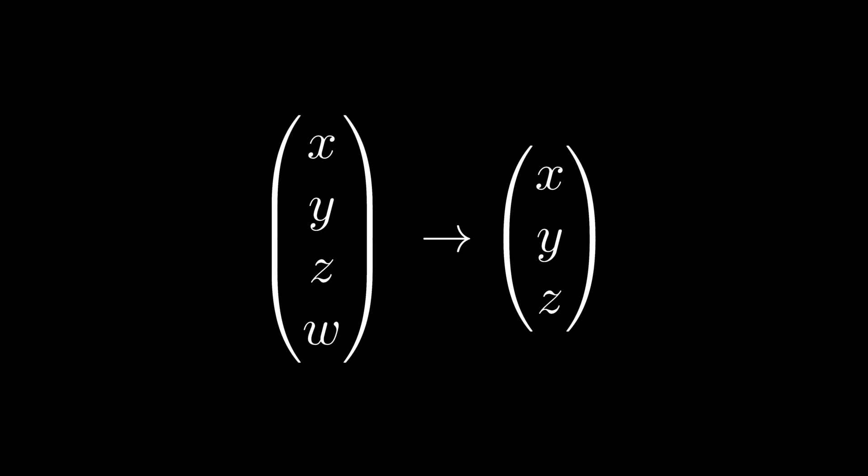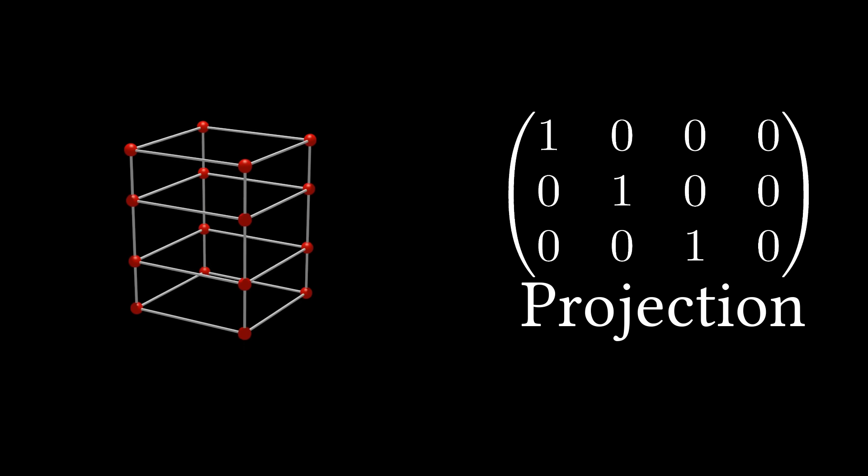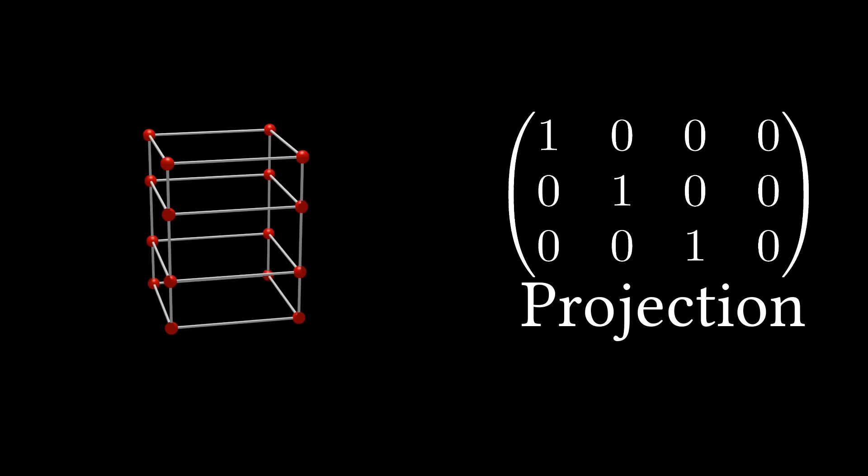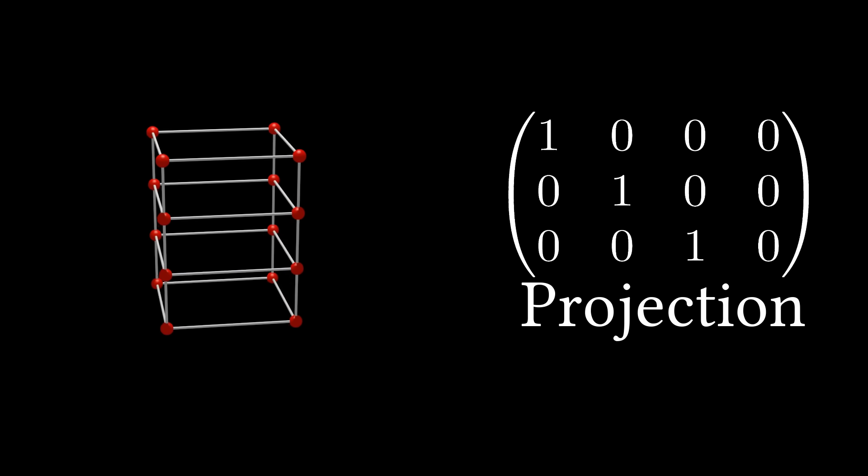Well, the obvious answer is to take a 3x4 matrix and multiply by that, but if we take any arbitrary matrix, say the identity matrix, with zeros along the W dimension, the rotation doesn't look quite right.